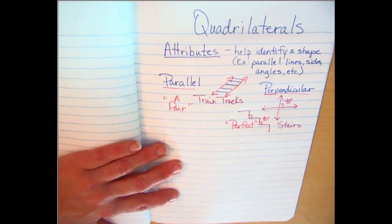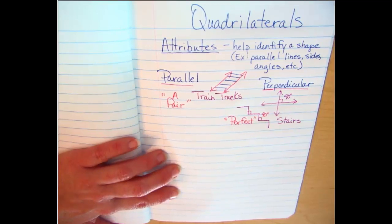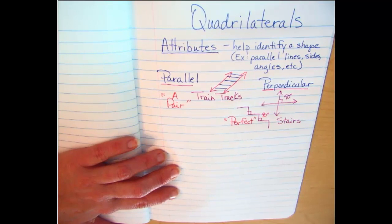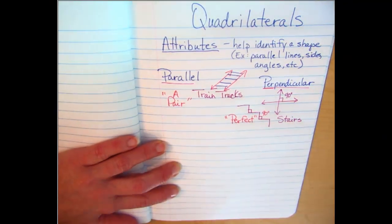Thumbs up if you're good with the vocabulary so far. Now I'm going to teach you how to classify the quadrilaterals. My students last year who did really well on the test drew this hierarchy chart enough times that they memorized it, and at the end of the year they drew it on paper to help them during the big test. We can't just call a square a square and be done.